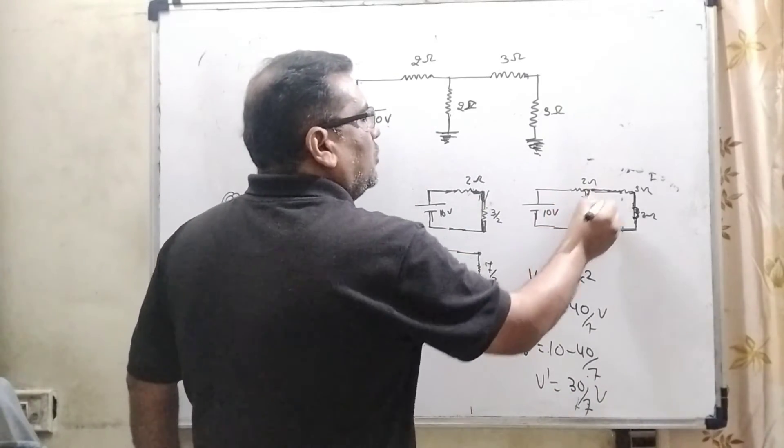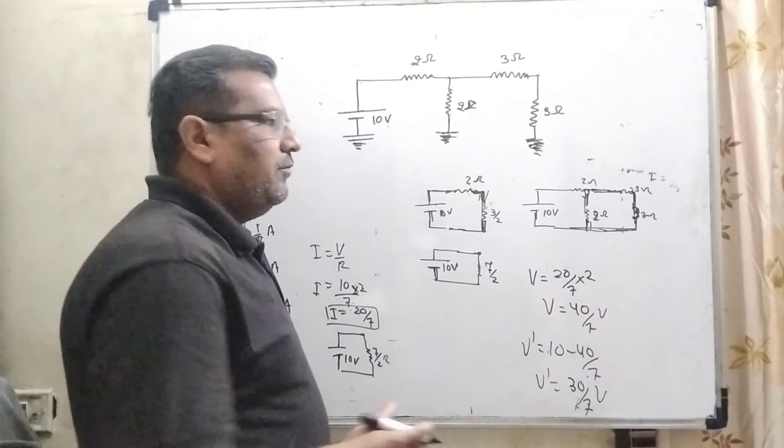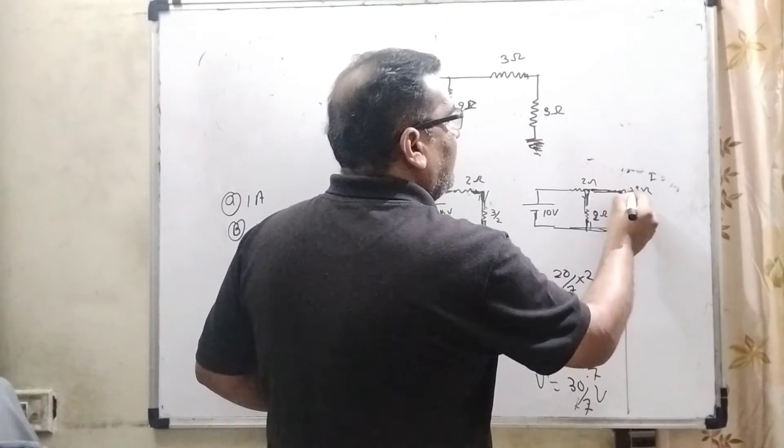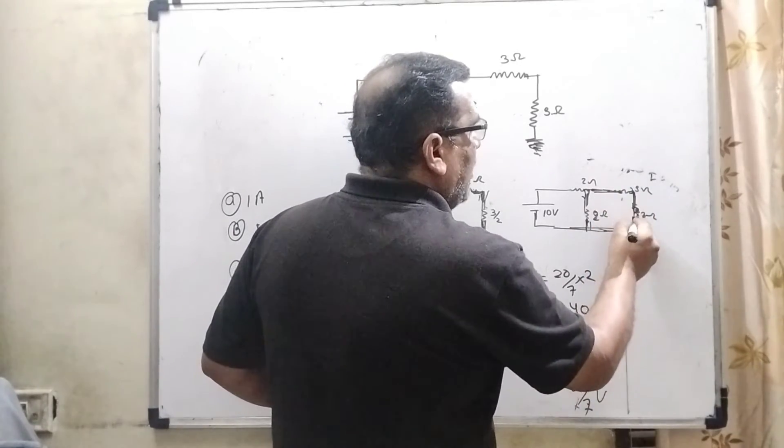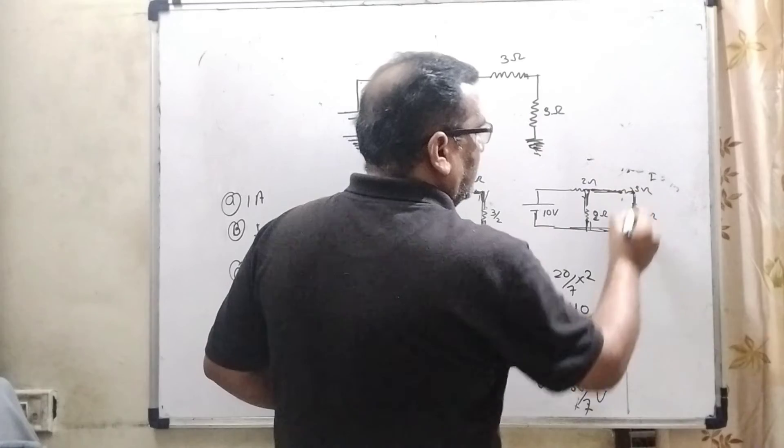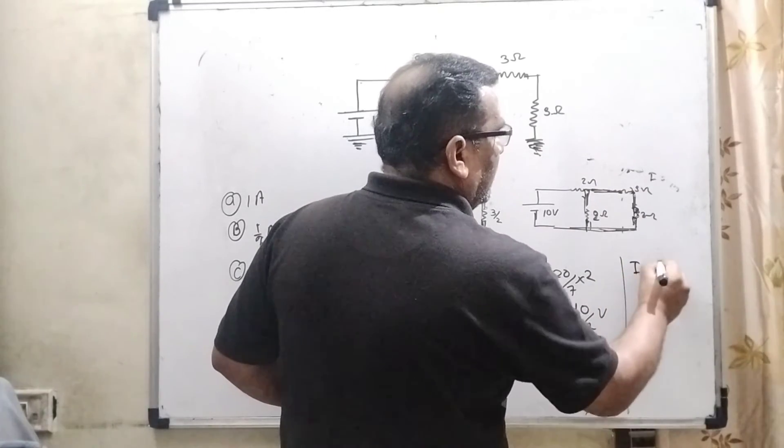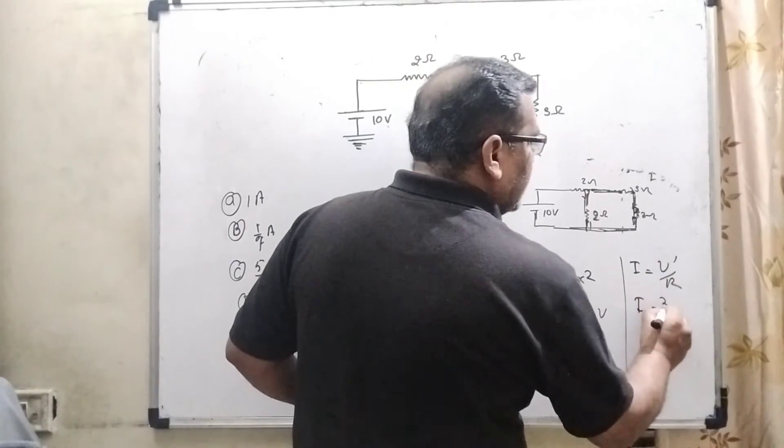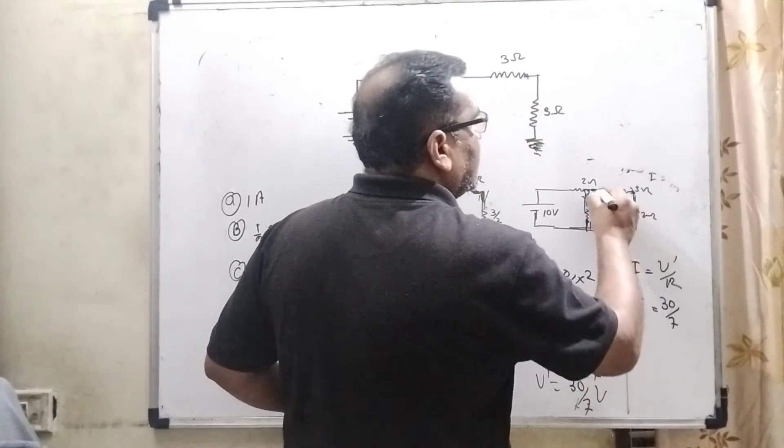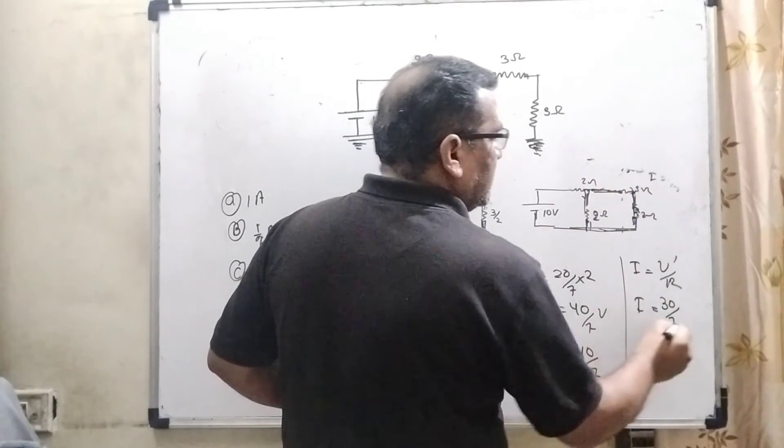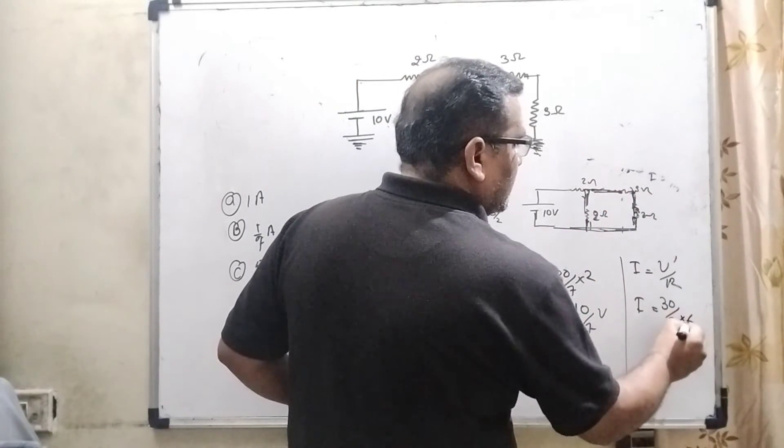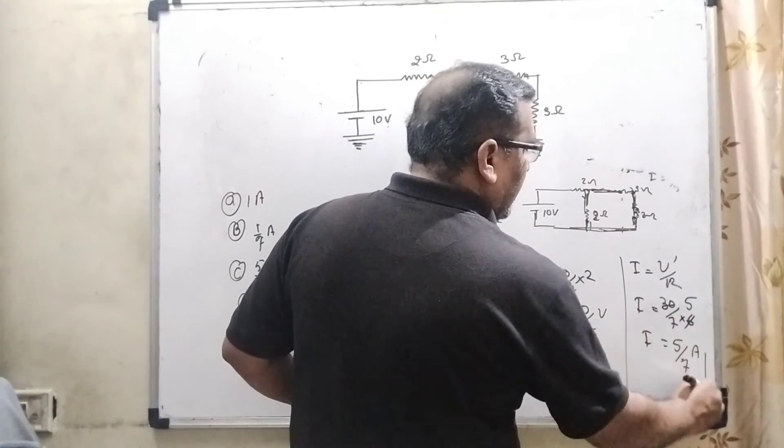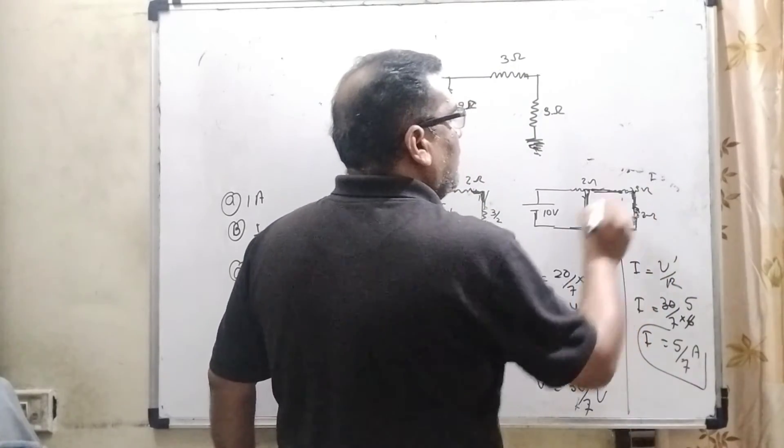Here, these 2 paths are parallel. Therefore, same potential. So here, 30 by 7, 30 by 7. So therefore, here we have to calculate the amount of current passing through 3 ohm. So here, I equal to V by R, V dash by R. Here, what is potential? 30 by 7. And net resistance - because 3 ohm and 3 ohm are in series, therefore that is 6 ohm. 6 into 30, then I equal to 5 by 7 ampere current passing through this 3 ohm resistance.